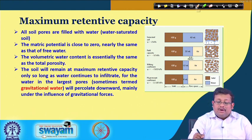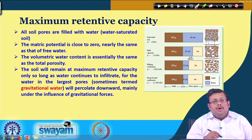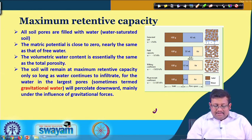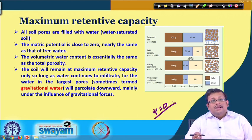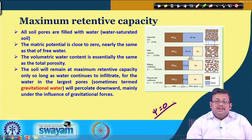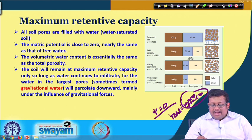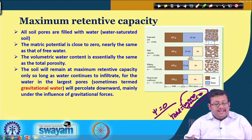The water-saturated condition is called the maximum retentive capacity of the soil because all pore spaces — both macro and micro pores — are filled. The metric potential in this case is close to 0, nearly the same as that of free water. The volumetric water content is essentially the same as the total porosity, since all macropores and micropores are filled. The soil remains at maximum retentive capacity only so long as infiltration continues.